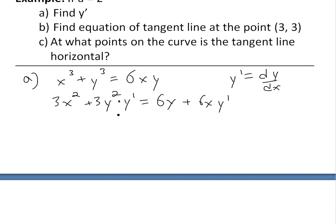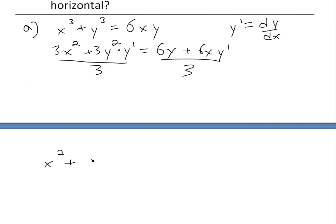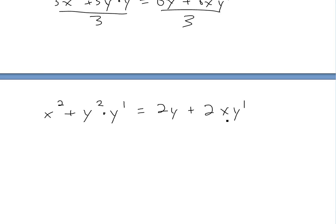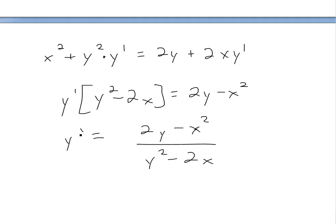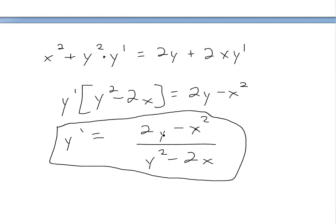So we get this, and now we just try to simplify everything. In this case everything has a factor of 3, so we divide both left and right side by 3. So we get x squared plus y squared times y prime equals 2y plus 2x y prime. Now we just move the y primes to the left side and move everything else to the right side. So we get y prime times (y squared minus 2x) equals 2y minus x squared. So y prime is equal to (2y minus x squared) over (y squared minus 2x). This is our general derivative, and it's in terms of both y and x.